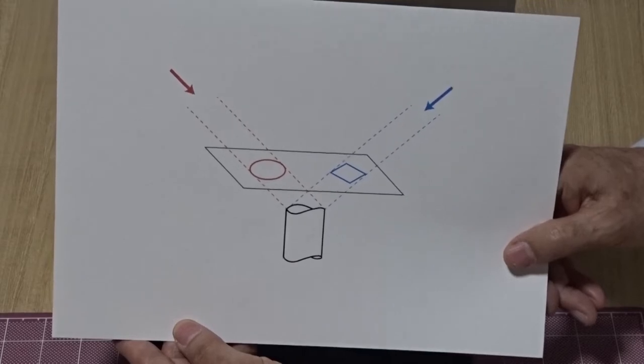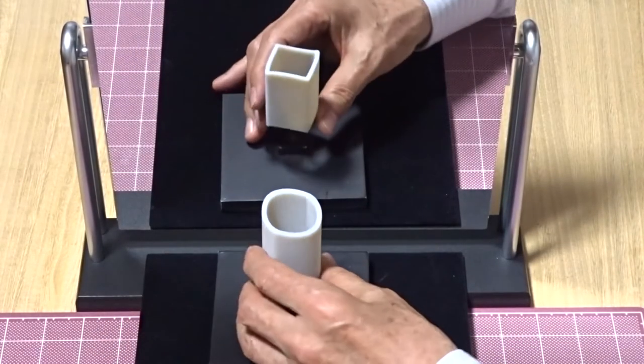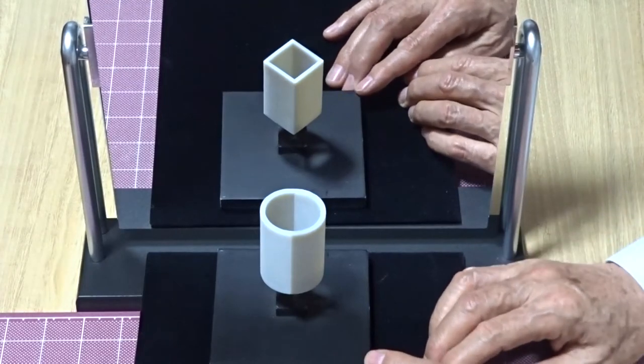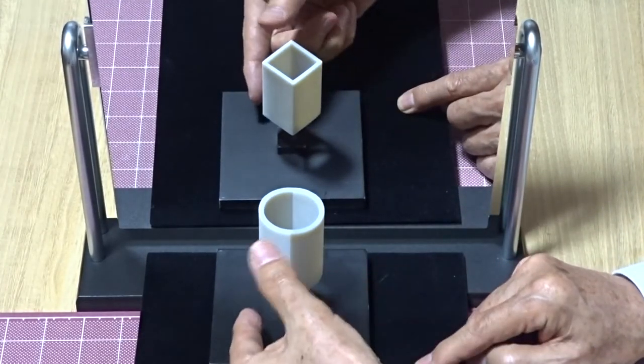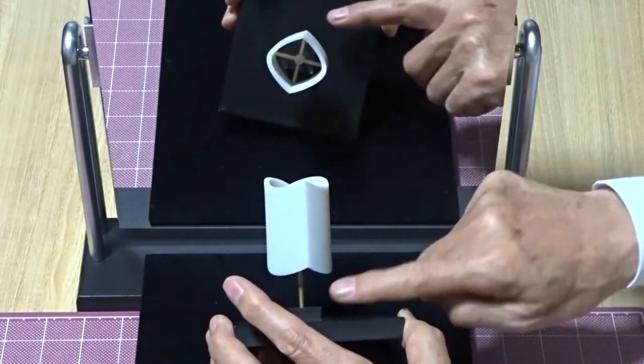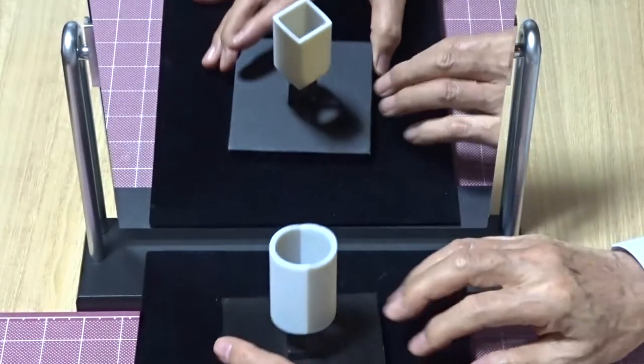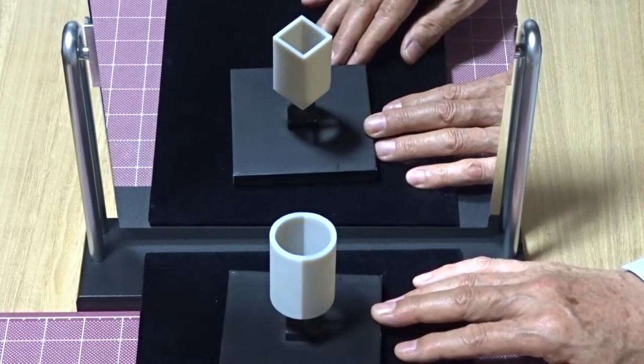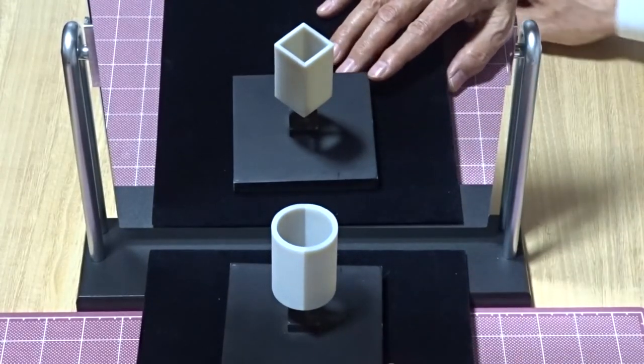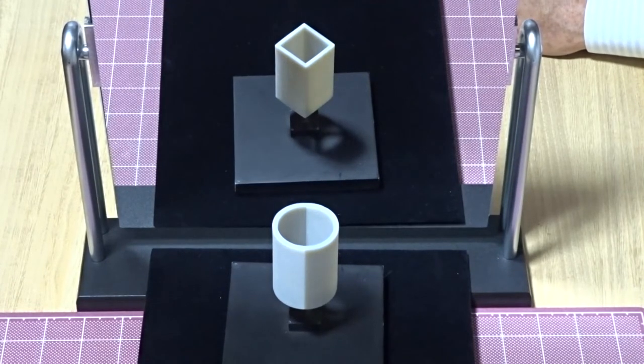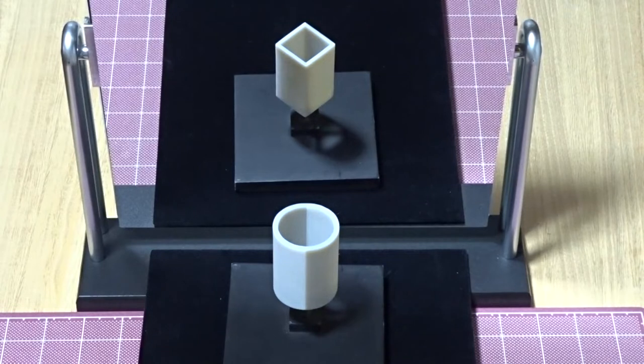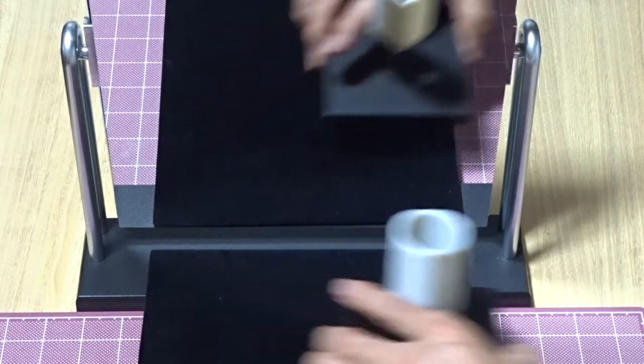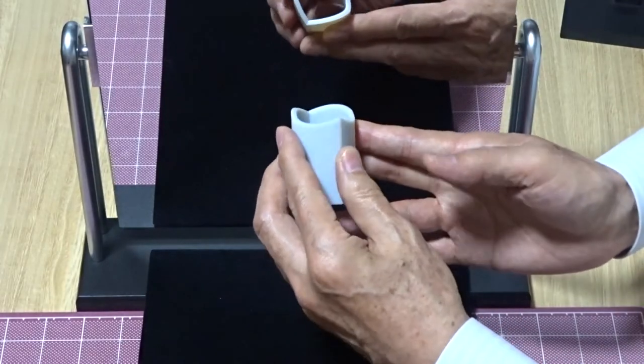Once we get this object and see from this direction, we feel that the height of the object is the same wherever we measure it. The top curve is sometimes up and sometimes down, but the bottom curve is also undulated in the same way, and so the length of the cylinder is homogeneous, same at every point. Our brains feel that this is a cylinder and the top curve is obtained by cutting the cylinder by a plane perpendicular to the axis.